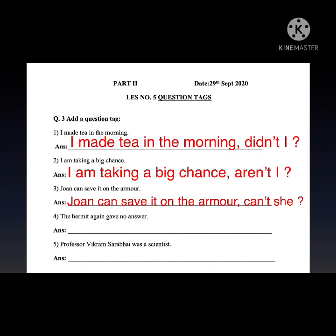The hermit again gave no answer.' The sentence is negative because of the use of 'no.' There is no auxiliary verb, so we'll use 'did' since the main verb 'gave' is in past tense. The answer will be: 'The hermit again gave no answer, did he?'